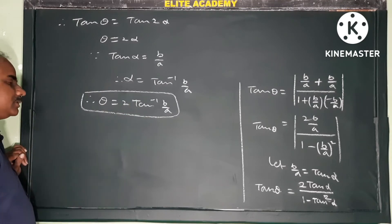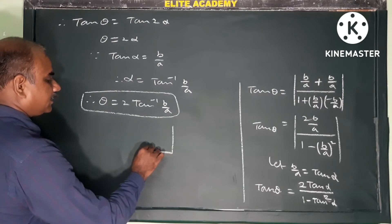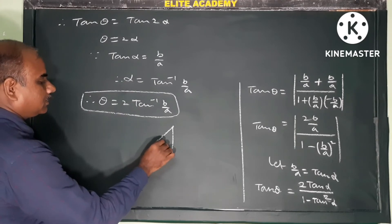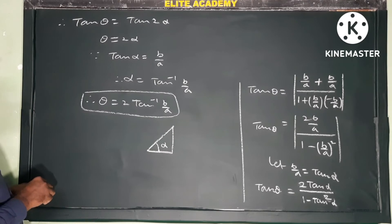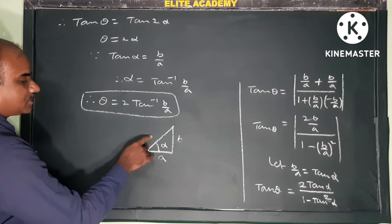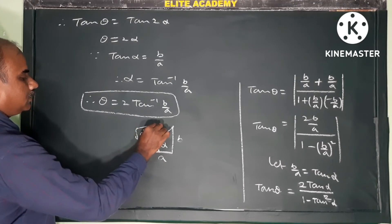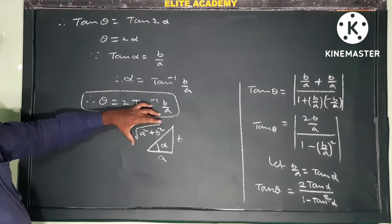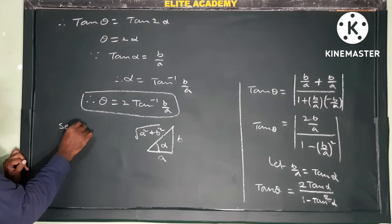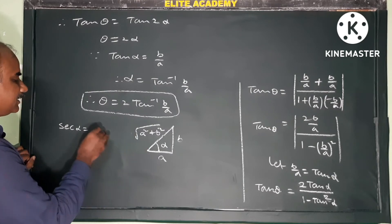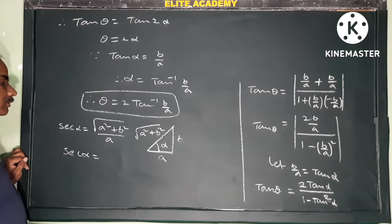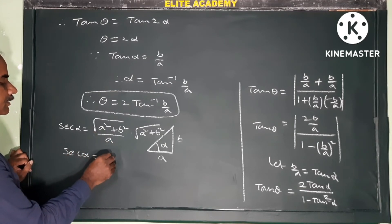Now for the other form, 2sec⁻¹(e). Let's take a right-angle triangle where tan α = b/a, meaning opposite side = b, adjacent side = a. By Pythagoras theorem, the hypotenuse = √(a² + b²). Now, sec α = hypotenuse / adjacent side = √(a² + b²) / a. Therefore sec α = √(a² + b²) / a, which is the eccentricity of the hyperbola.